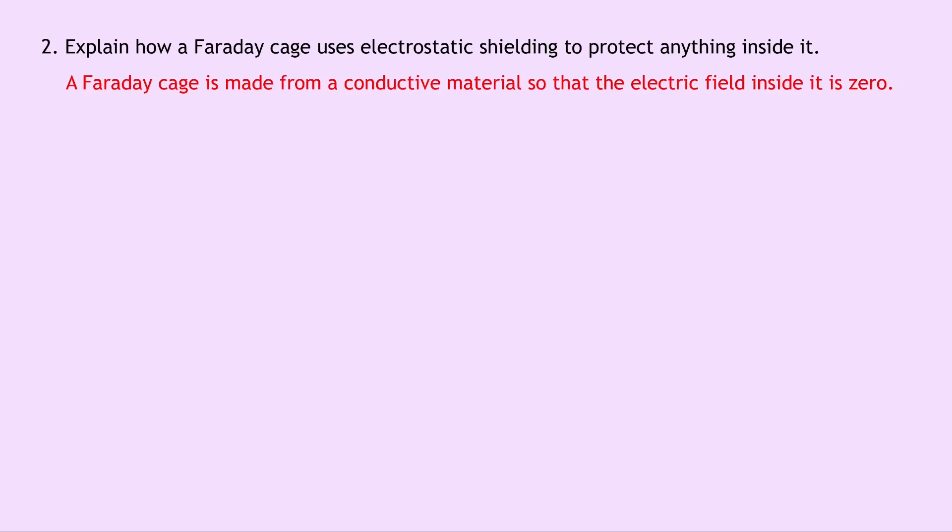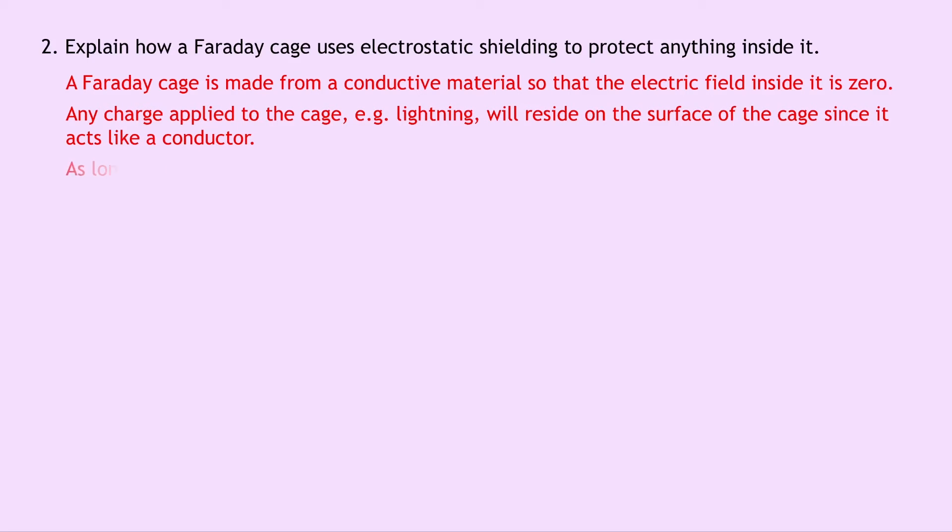Well firstly a Faraday cage is made from a conductive material so that the electric field inside it is zero. Any charge applied to the cage, for example due to lightning, will reside on the surface of the cage since it acts like a conductor. As long as you don't touch the cage from the inside you will be safe.